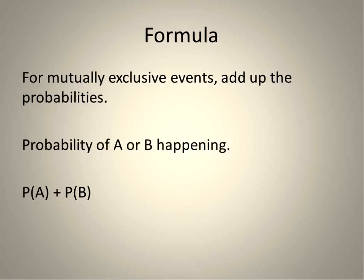Now let's look at actually calculating a little bit using our mutually exclusive events. For mutually exclusive events, you just add up the probabilities. So the probability of A happening or B happening, you just add them up. Probability of A plus probability of B will give you the probability of one or the other happening. This will make sense when we do a question together.